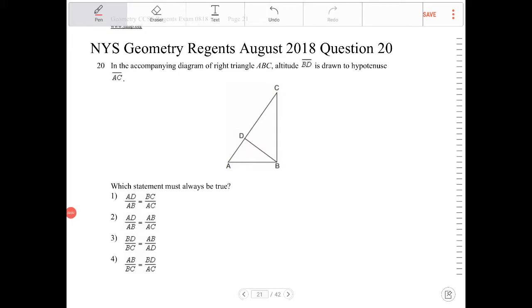In the accompanying diagram of right triangle ABC, altitude BD is drawn to hypotenuse AC. Which statement must always be true?